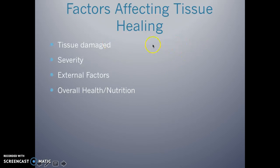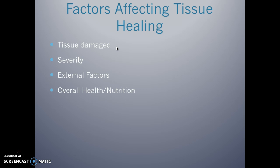Several factors affect tissue healing: the type of tissue damaged — ligaments versus bone versus tendon will respond differently; the severity, such as a grade one versus grade three sprain, affects healing time; external factors like your environment and the demands of your job or activity; and overall health and nutrition — what you put into your body, whether you're overweight, drinking enough water, or a smoker, all of which we know inhibits the healing process.